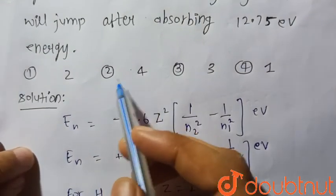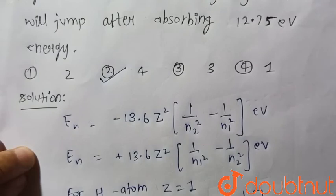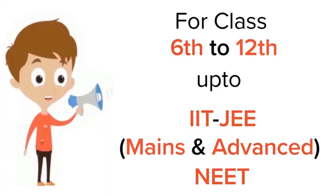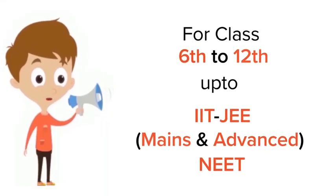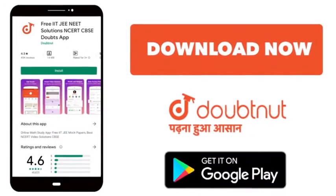This is given in option number second, hence option second is the correct choice. Thank you. For class 6 to 12, IIT-JEE and NEET level, trusted by more than 5 crore students, download doubtnet today.